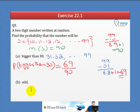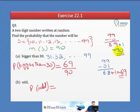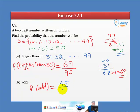Part B: Probability of an odd number. The total sample space has 90 numbers. Half are odd and half are even, so there are 45 odd numbers. The probability of an odd number is 45 over 90.